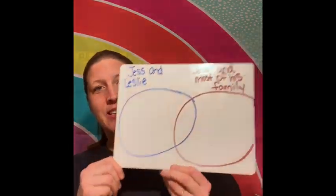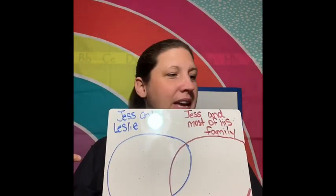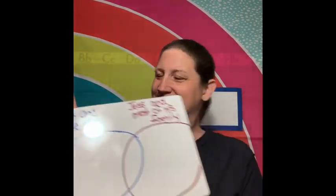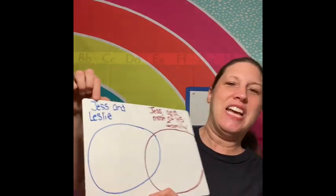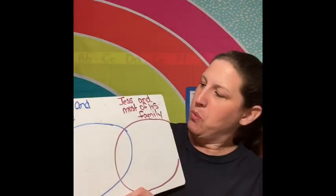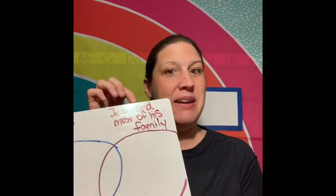For this lesson, we're going to make a Venn diagram and compare and contrast Jess and Leslie's relationship with Jess and most of his family. I say the word most, of course, because Maybelle is a little bit different.